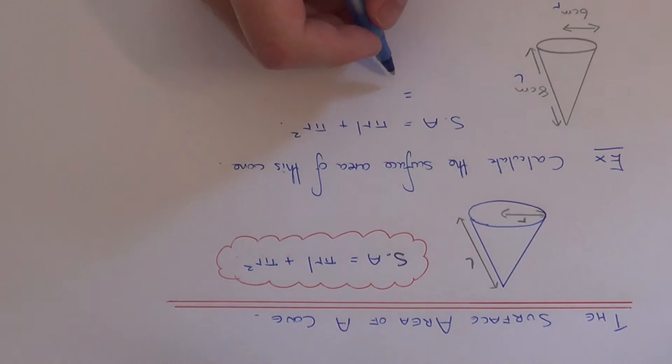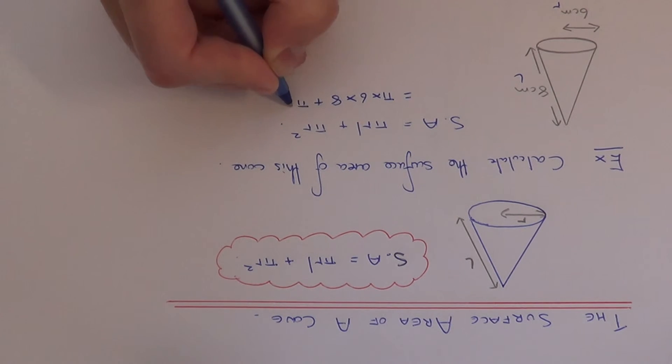So if you substitute these numbers in, it will be pi times 6 times 8 plus pi times 6 squared.